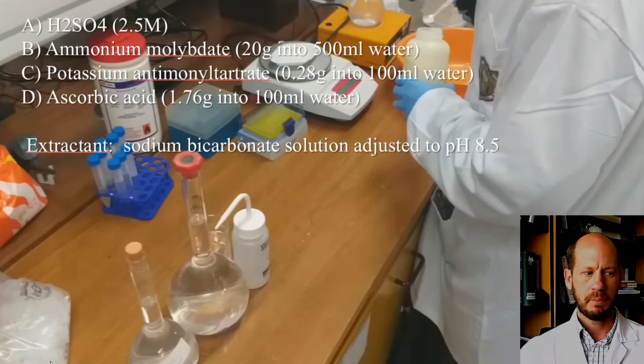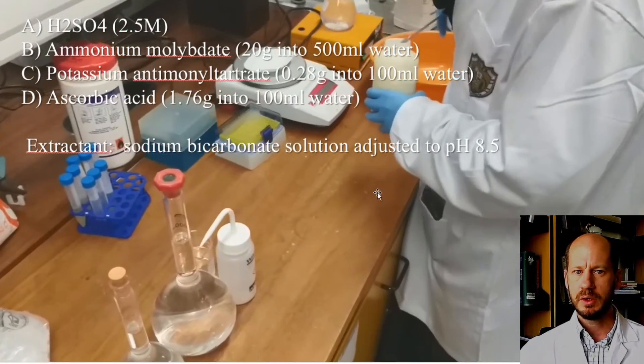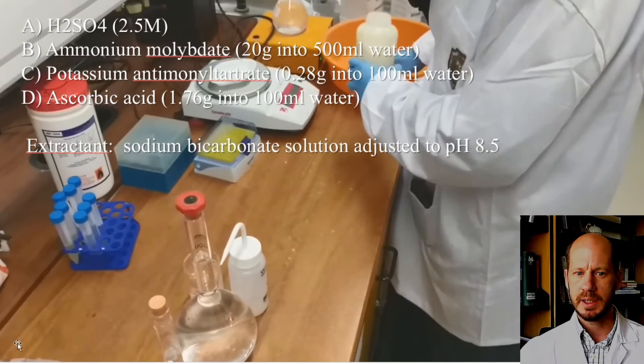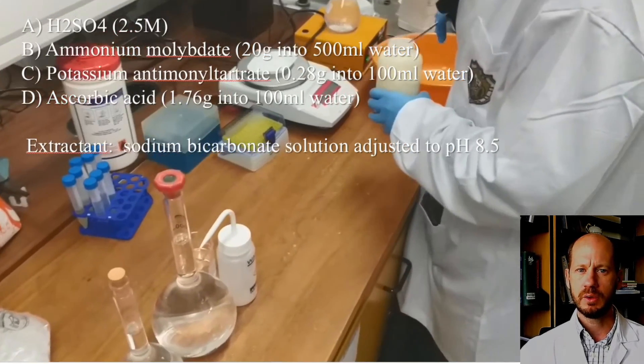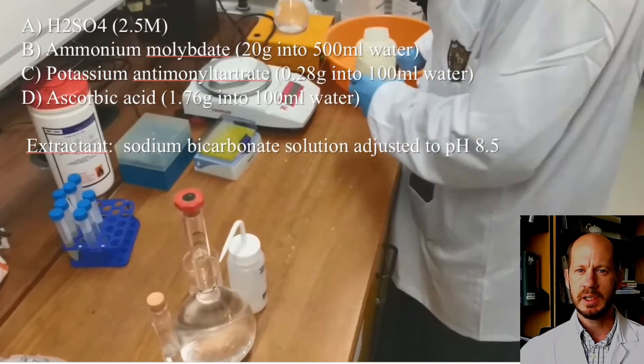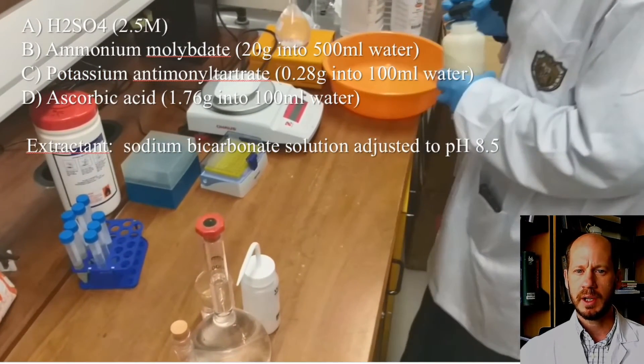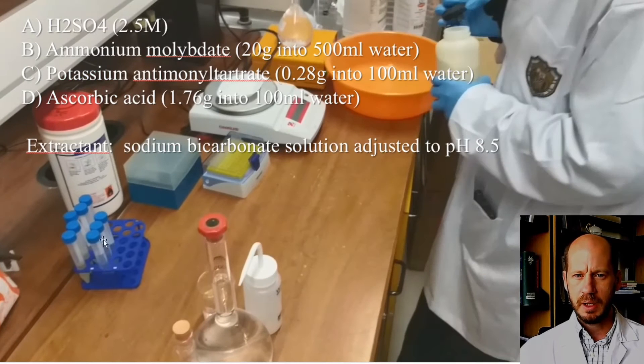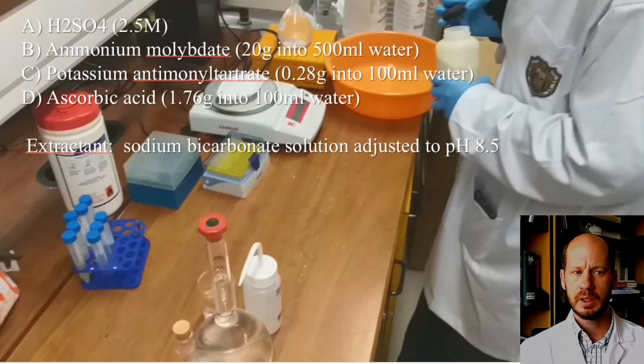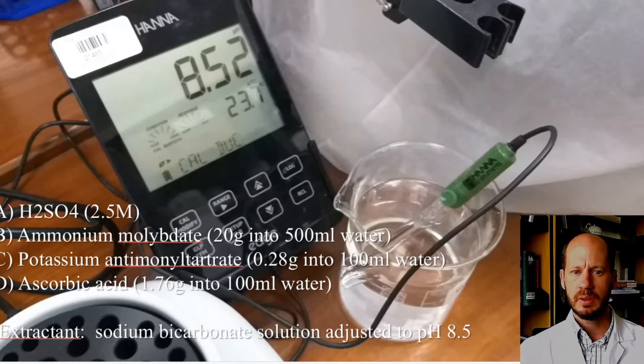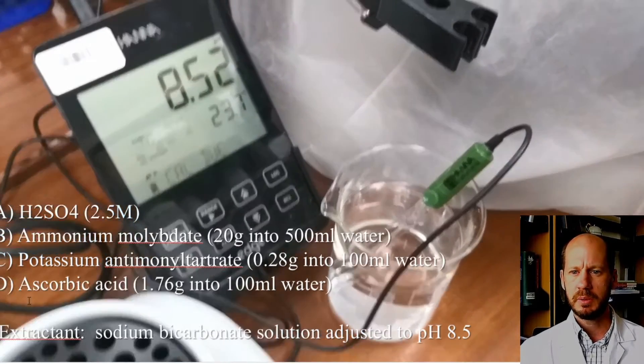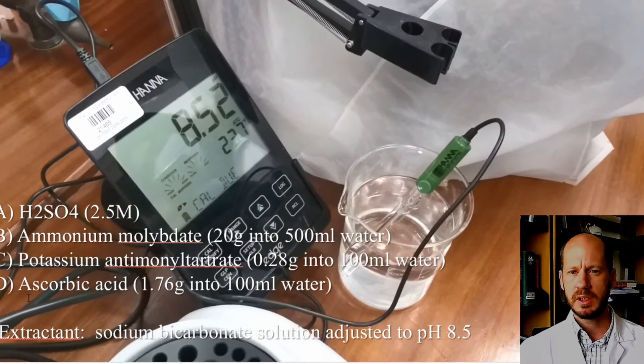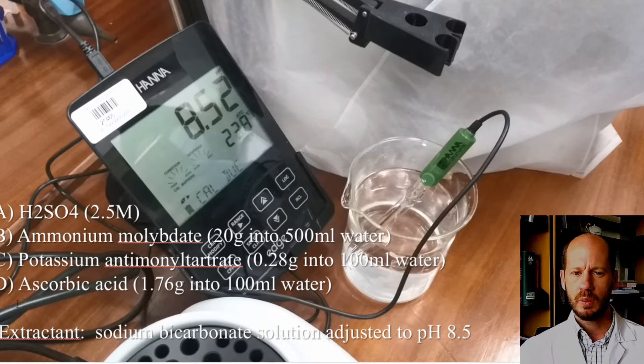I'm going to play here some videos from the lab. This is the same protocol that I explained last time. We have to prepare four solutions: acid, ammonium molybdate, potassium antimony tartrate, and ascorbic acid. These four solutions are for the color development reagent. But this time we also need to prepare the extractant, and the Olsen extraction would be sodium bicarbonate at pH 8.5. Here we're preparing this sodium bicarbonate, just adjusting the pH of this solution before we use it.